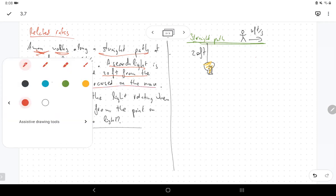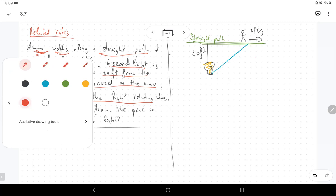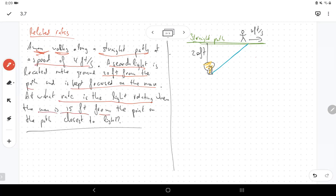I guess I need to draw the line joining the light and the man. So there's a question mark, so that's probably the thing that I want to find out. What is the rate of rotation of the line? And then there's some more information. The man is 15 feet from the point on the path closest to the line.